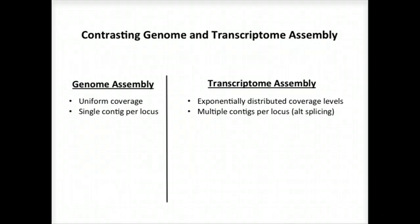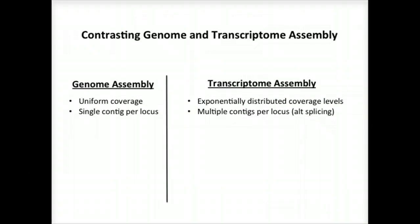Genome assemblers aim to generate a single contig per locus, possibly two if representing separate haplotypes in a polymorphic genome assembly. In transcriptome assembly, it's understood that single genes can generate many alternatively spliced transcripts, and multiple contigs are reported per locus where evidence of transcript complexity exists.